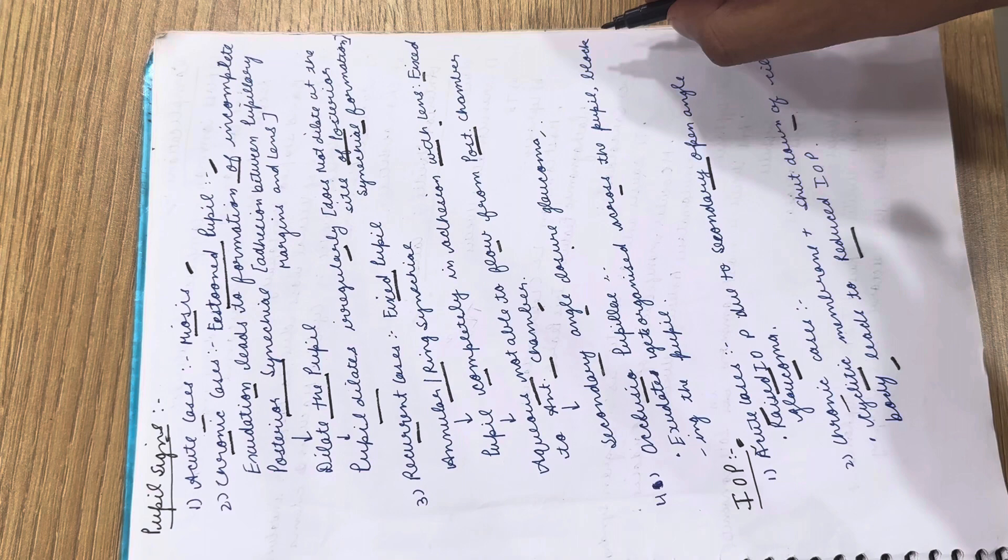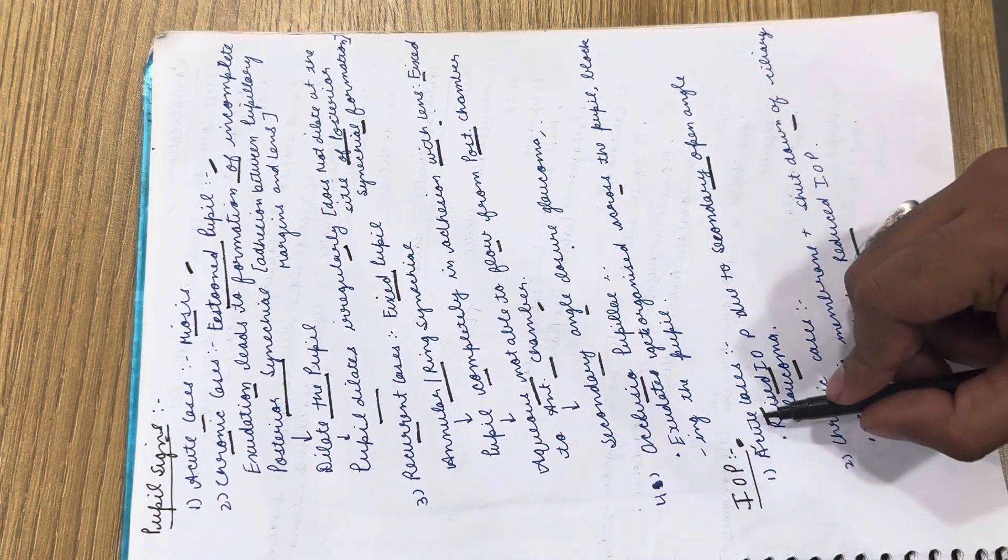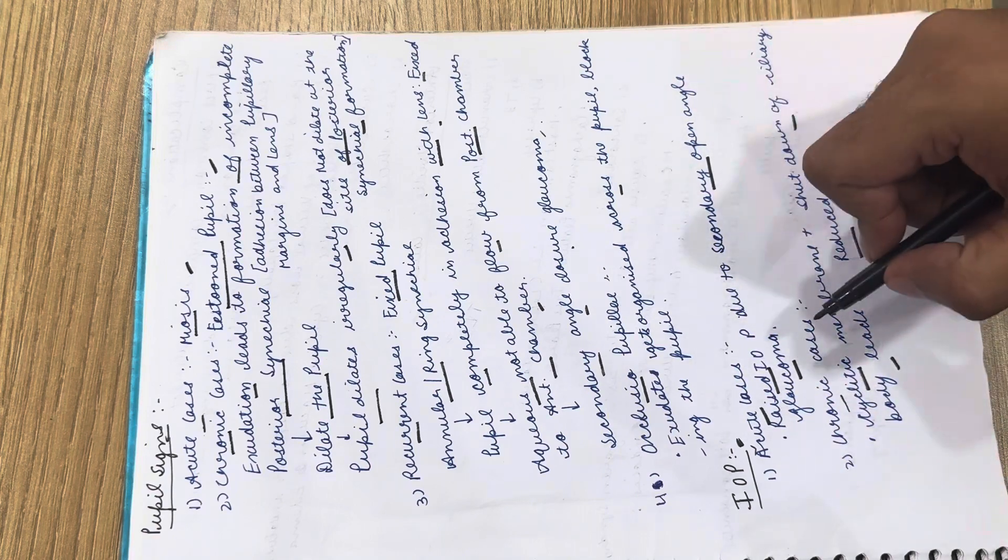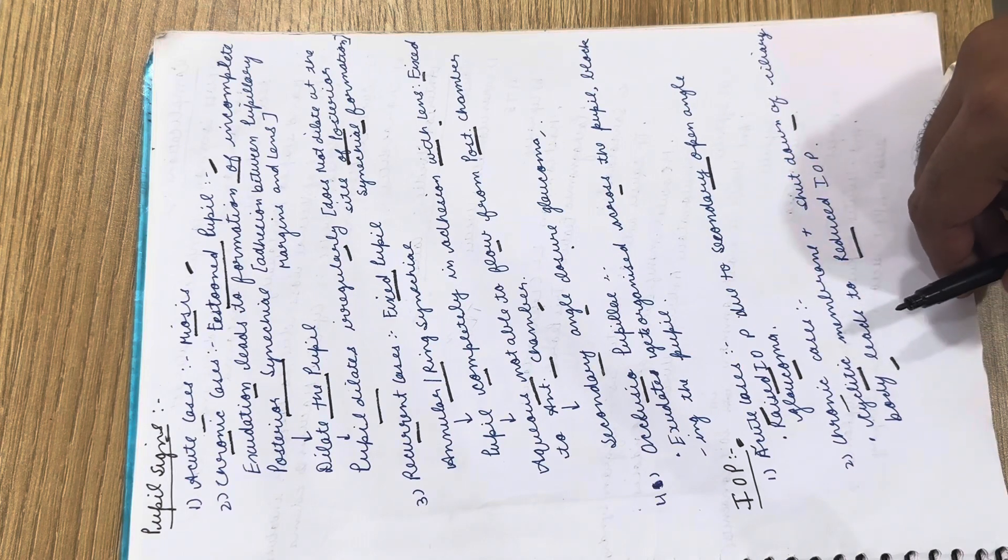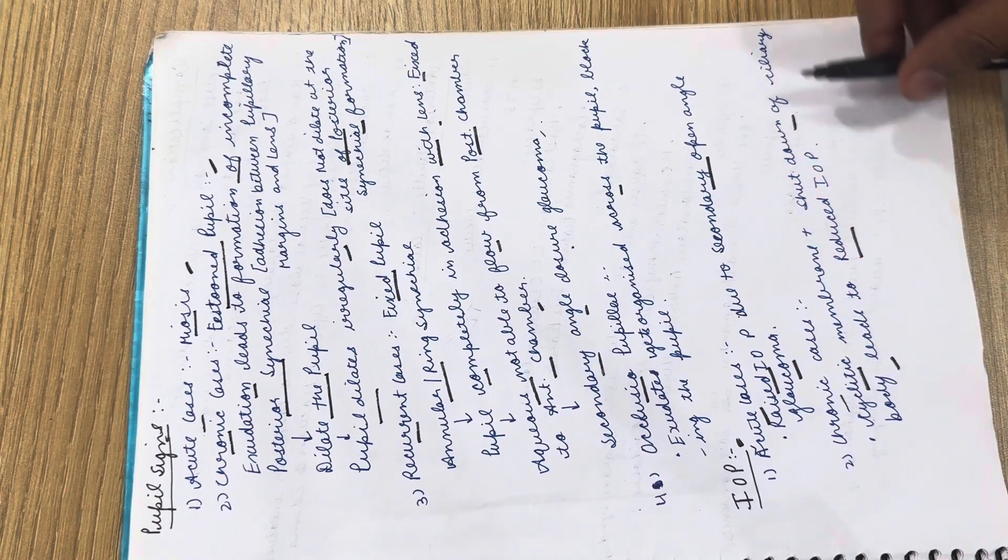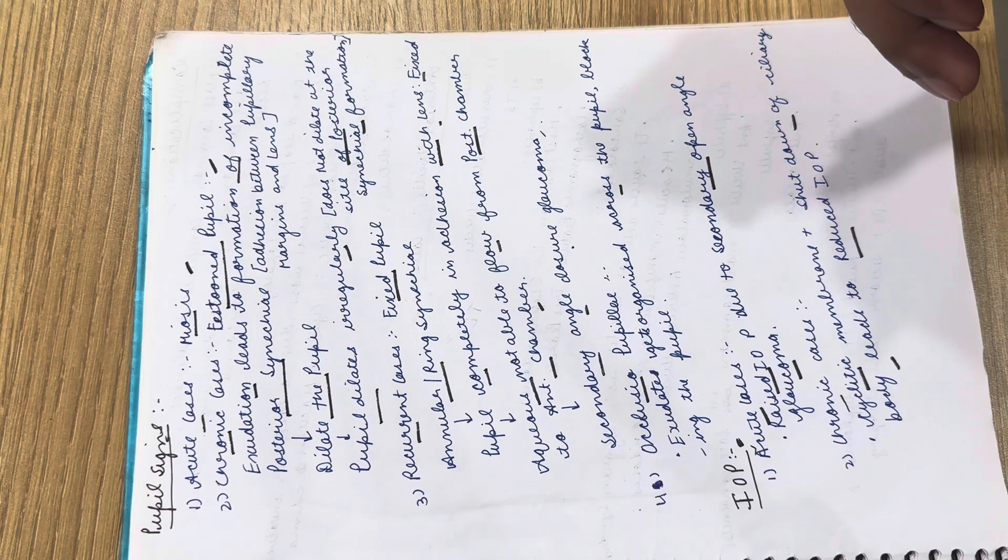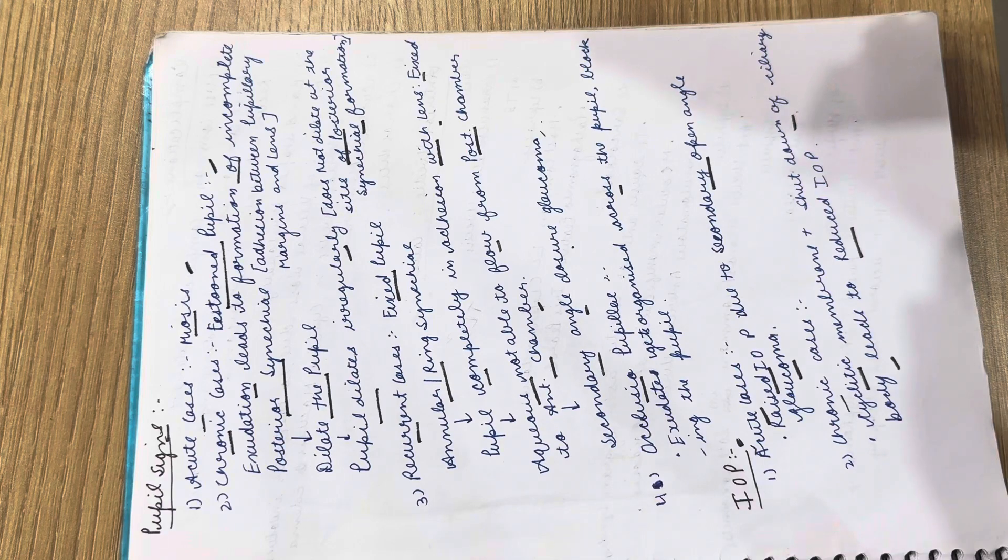Regarding IOP: in acute cases, there is raised IOP due to secondary open-angle glaucoma. In chronic cases, due to cyclitic membrane and shutdown of the ciliary body, there is reduced IOP. So in acute cases there is increased IOP, and in chronic cases there is decreased IOP.